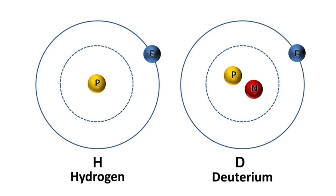To start off fairly simply, deuterium is like a big hydrogen. The difference between it and hydrogen is that deuterium has a neutron as well, so it's bigger and has more mass. The fact that it's bigger is really important for biochemical processes because it ties into Einstein's equation E=mc², where E is energy, m is mass, and c is the speed of light. Deuterium being bigger than hydrogen also makes it more challenging for quantum tunneling and certain biochemical reactions in the cell.